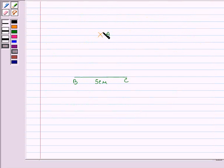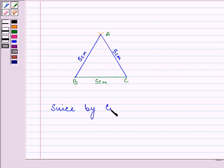Let us first join A with B and then A with C. Now if you notice, AB is also of length 5cm while AC is also of length 5cm. So by construction, AB